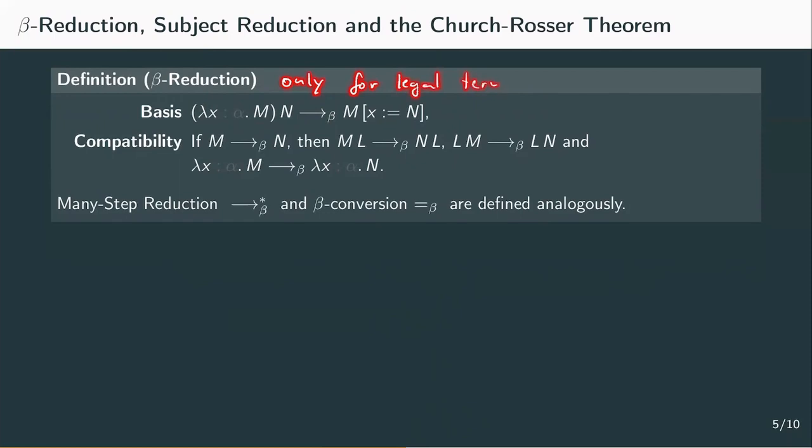In the definition of one-step beta reduction, only the look of the abstraction changes. This is what the definition for the untyped lambda calculus looked like, and this is the definition with simple types. Many-step beta reduction as an extension of the one-step reduction and beta conversion as the extension of the many-step reduction are defined analogously.